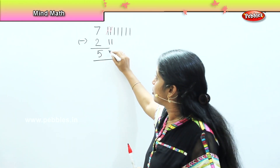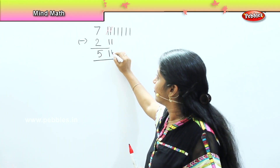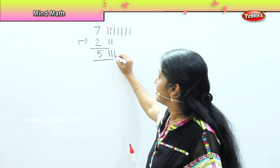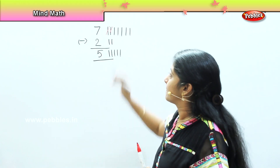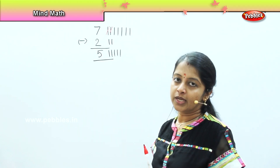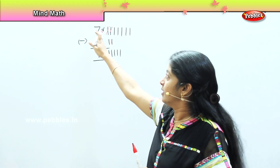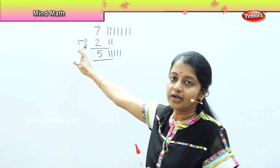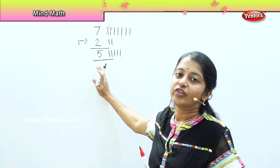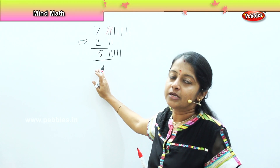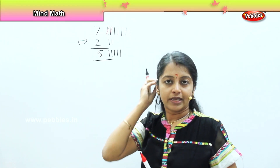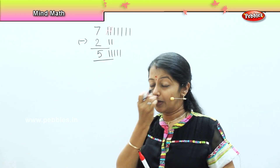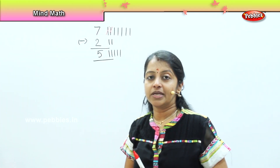So the number of bananas which Pari had finally was five. I draw here five lines. Seven when subtracted by two will give me the answer five. Were you able to solve along with me?